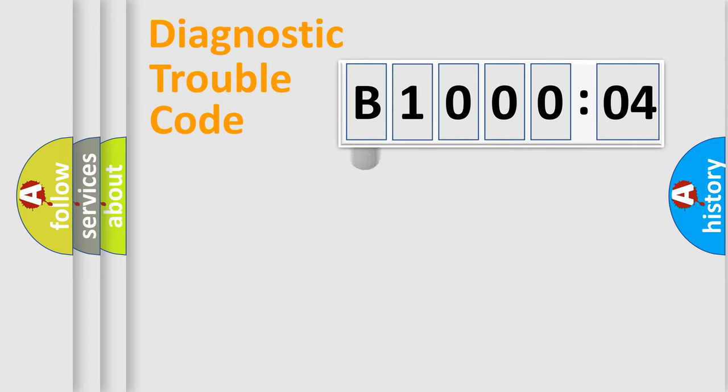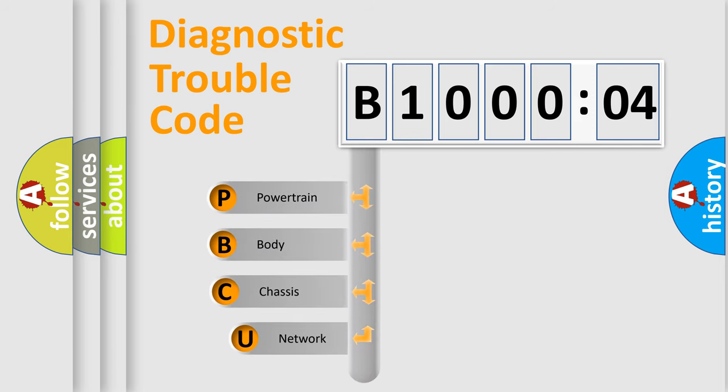First, let's look at the history of diagnostic fault code composition according to the OBD2 protocol, which is unified for all automakers since 2000. We divide the electric system of automobile into four basic units.